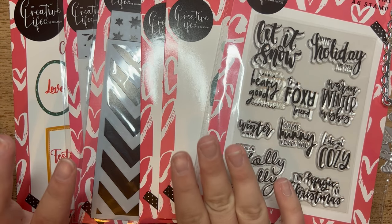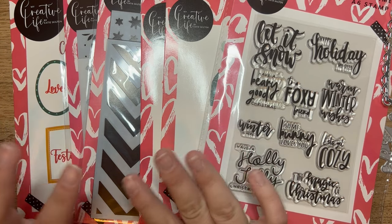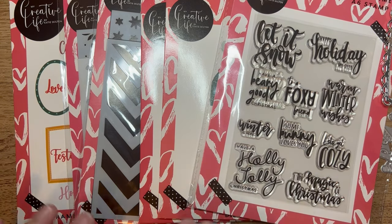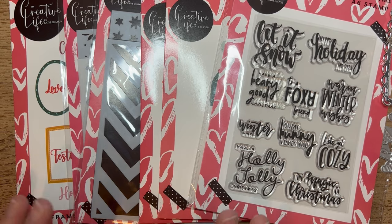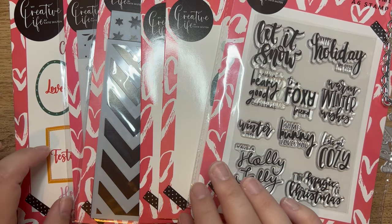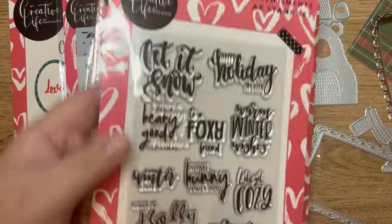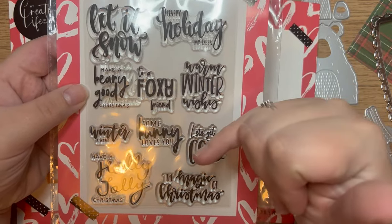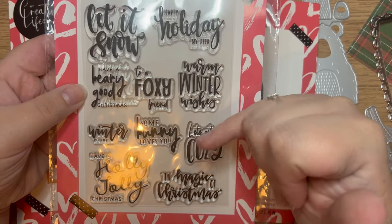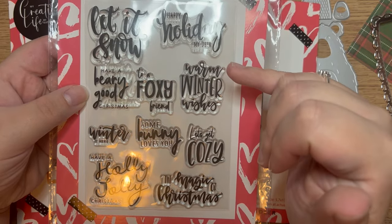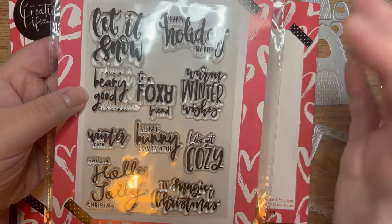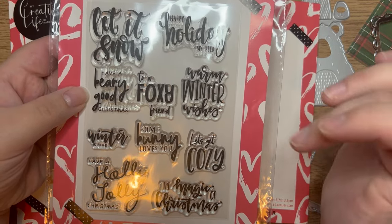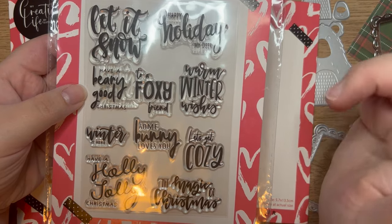This is the Festive Animal Antics Complete Bundle and I want to go through what you're going to get in this bundle. The first thing is this fantastic A6 stamp set with lots of different stamps including Happy Holiday My Dear, Have a Very Good Christmas, To a Foxy Friend, and Somebody Loves You.